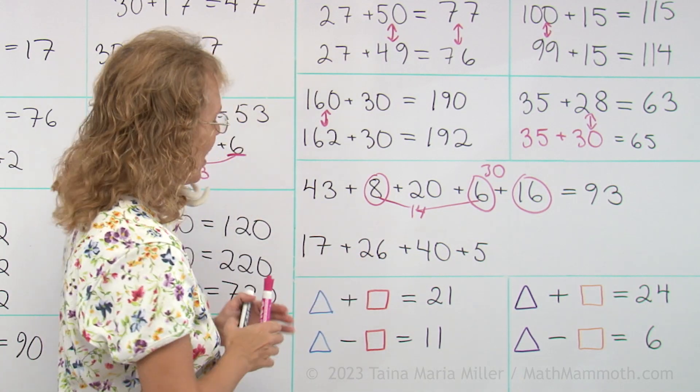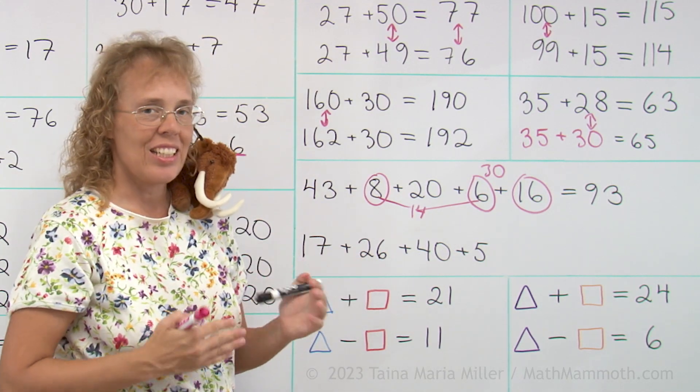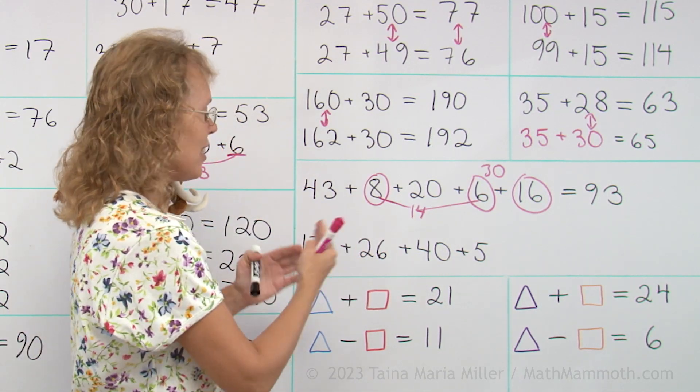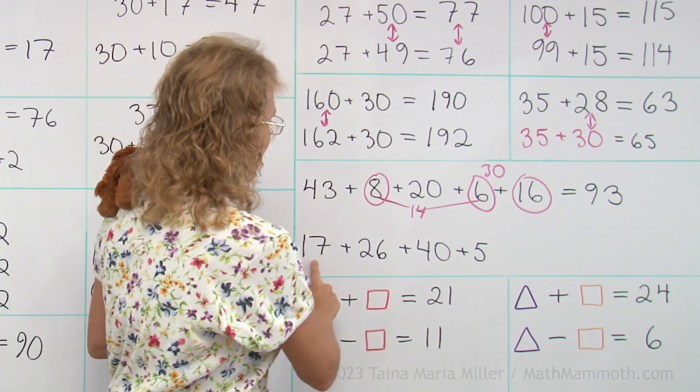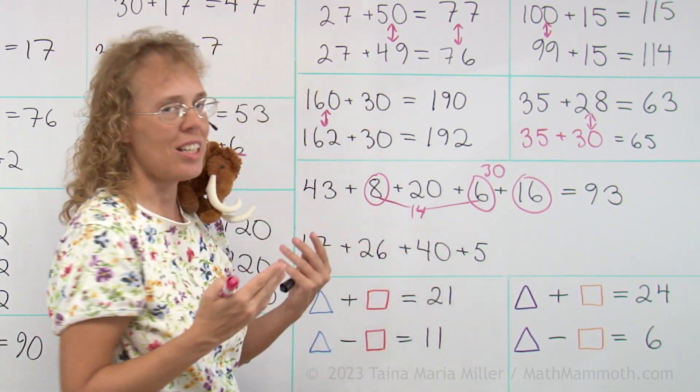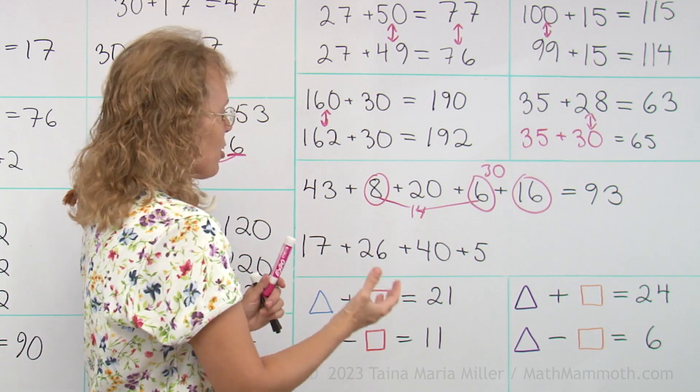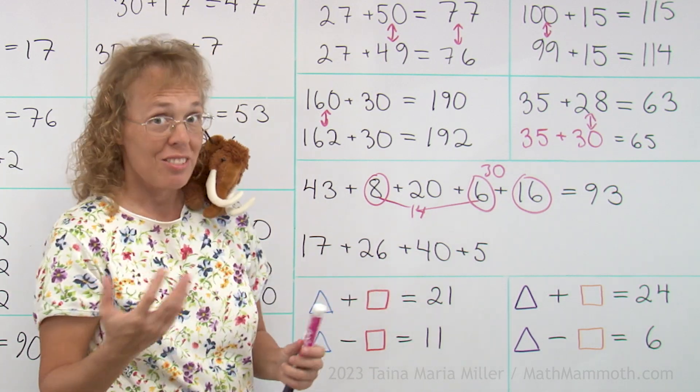In this one, I cannot easily see, there is no way to just add numbers to make whole 10s because 7 and 6 and 5 don't add up to any whole 10. So there's many different ways you can add in many different orders.